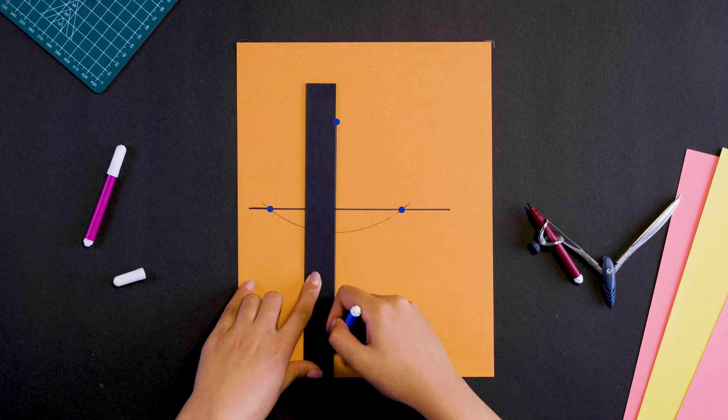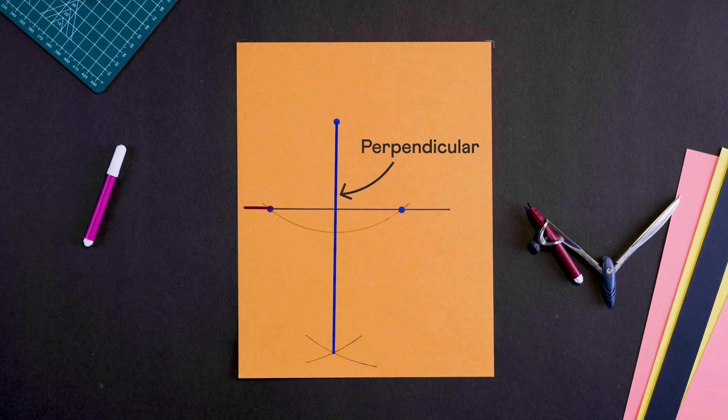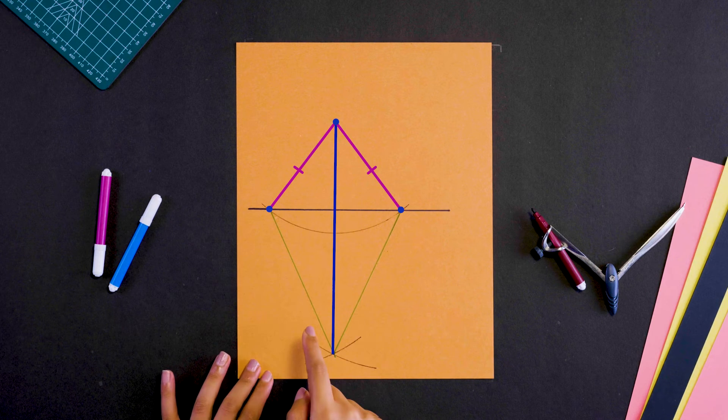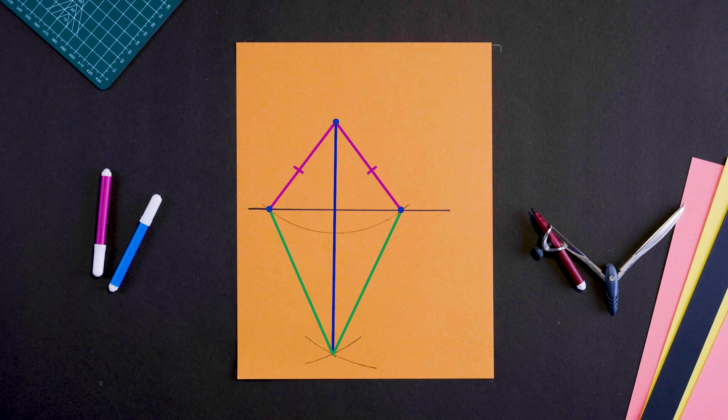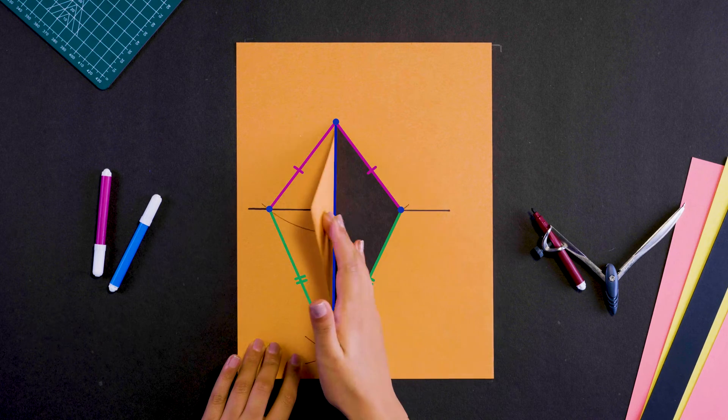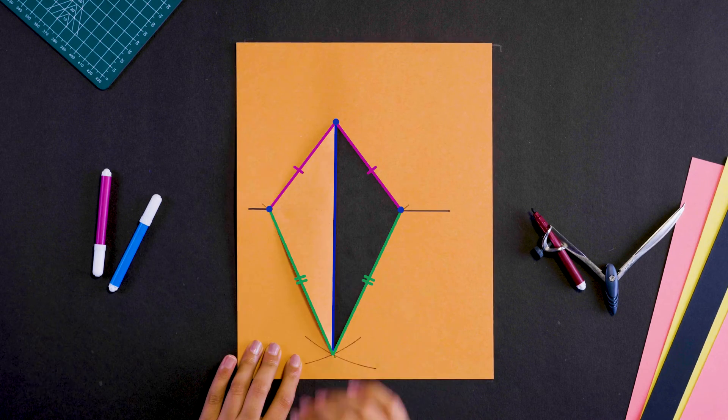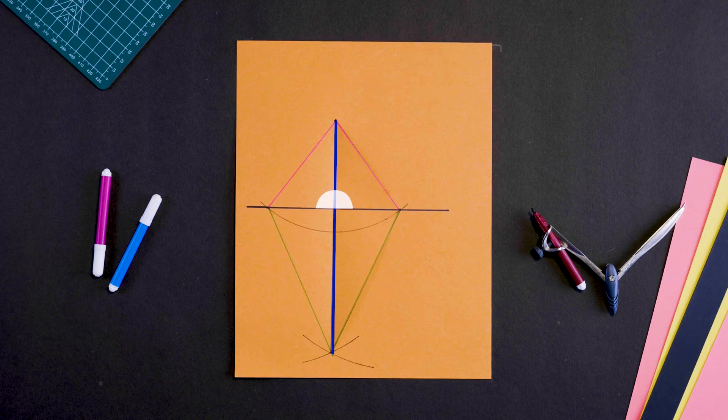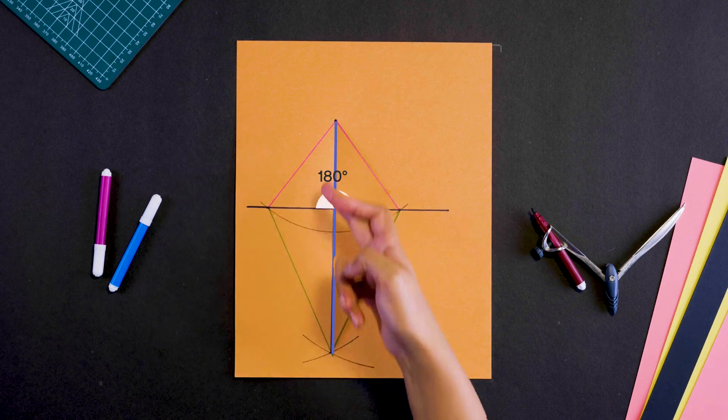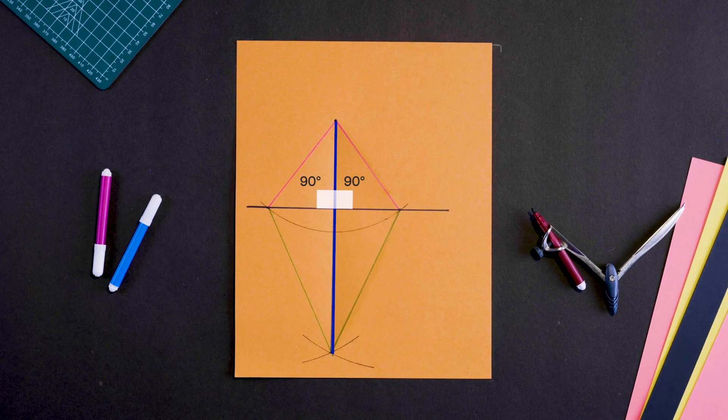Now you already know why this line must be the perpendicular of this line. These two lines are equal to the radius of this arc and these two lines are also equal. So, these two triangles perfectly overlap making these two equal angles. Since they together make a straight angle, the line must be at right angles to this line.